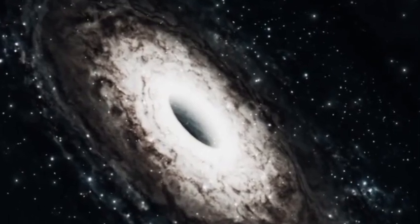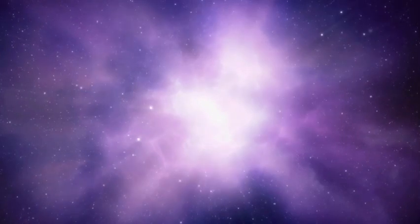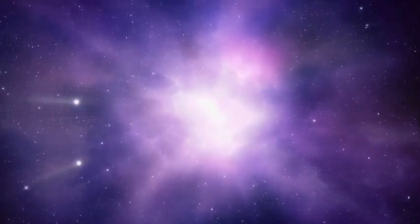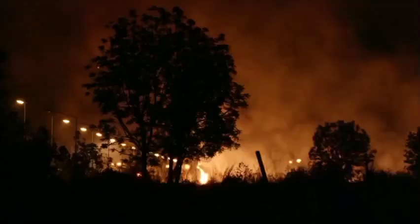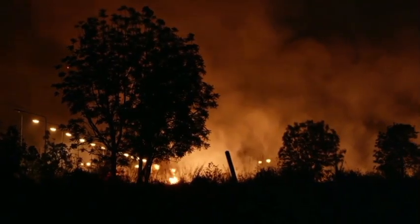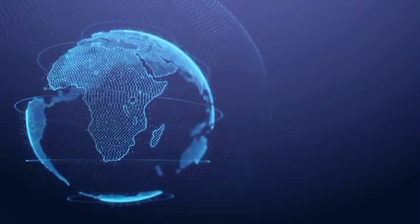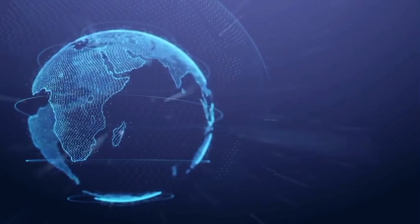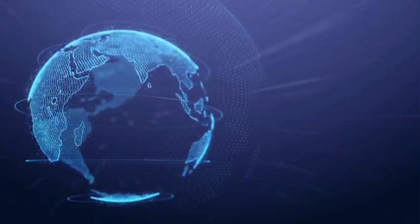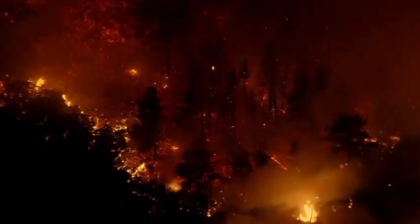Despite its proximity, just 4.24 light-years away, it remains undetectable to the naked eye due to its relatively low brightness. Proxima Centauri contains a wealth of scientific value, particularly as the host of an orbiting exoplanet known as Proxima b, within the star's habitable zone.